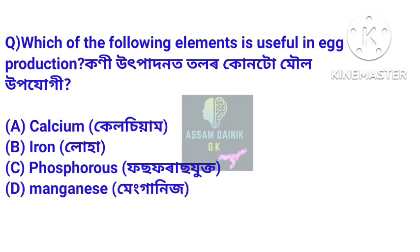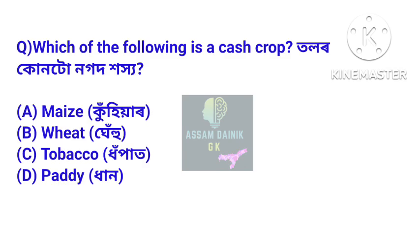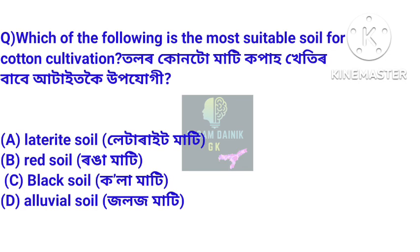Next question: which of the following elements is useful in egg production? Next question: which of the following is a cash crop?